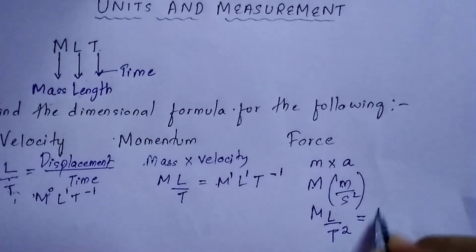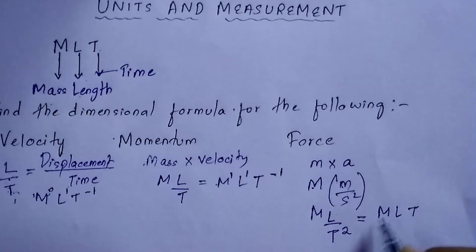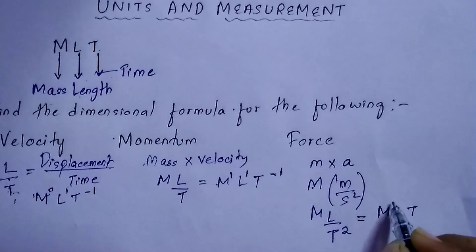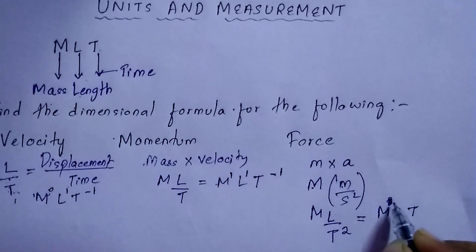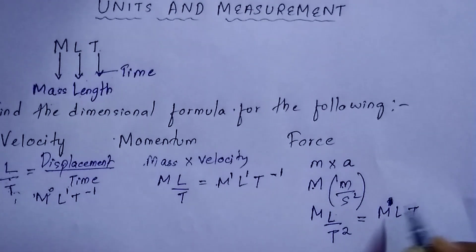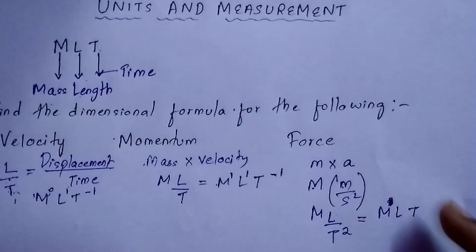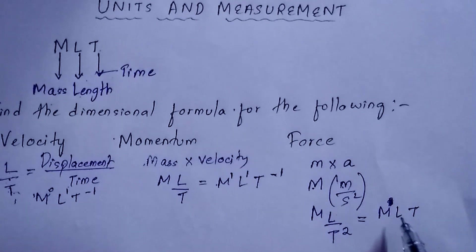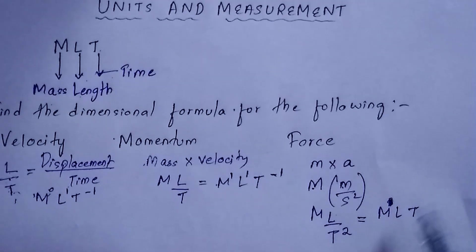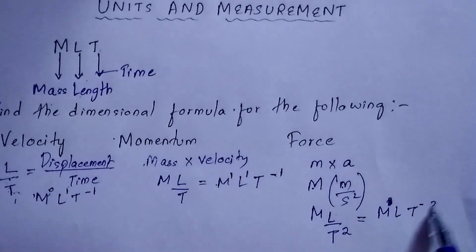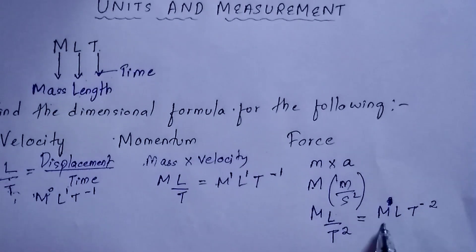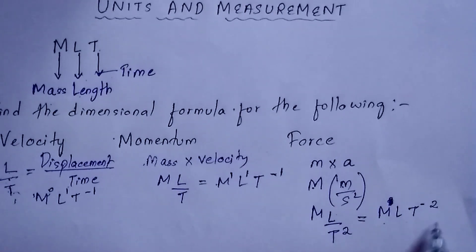The dimensional formula for force is MLT⁻². M is 1, L is 1 — if nothing is written, that means 1 is always there, so no need to write 1 each time. T goes up and becomes T⁻². So this is the dimensional formula for force: M¹L¹T⁻².